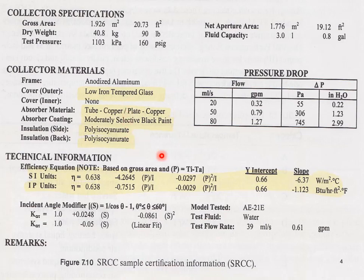The lower highlighted portion gives us the equation of the straight line which approximates the efficiency with respect to ambient temperatures and solar radiation.